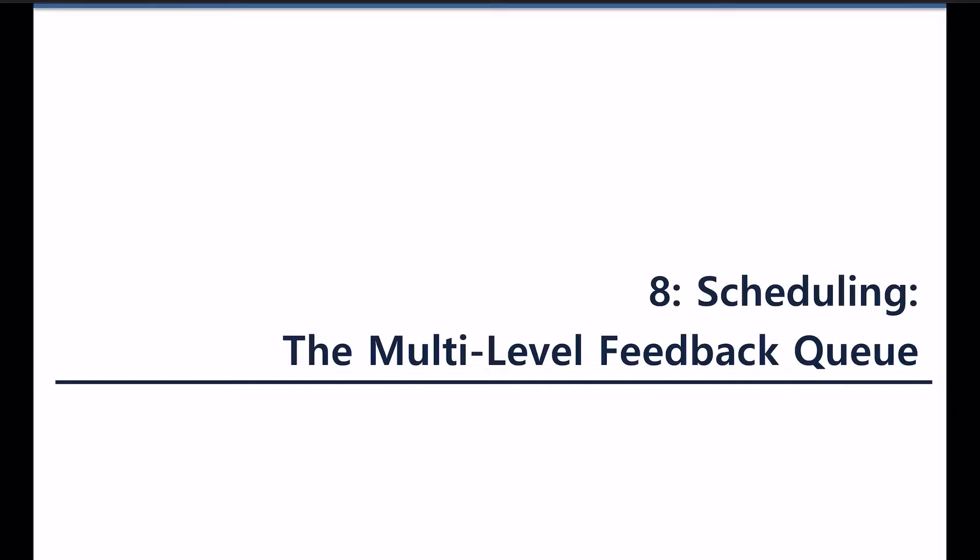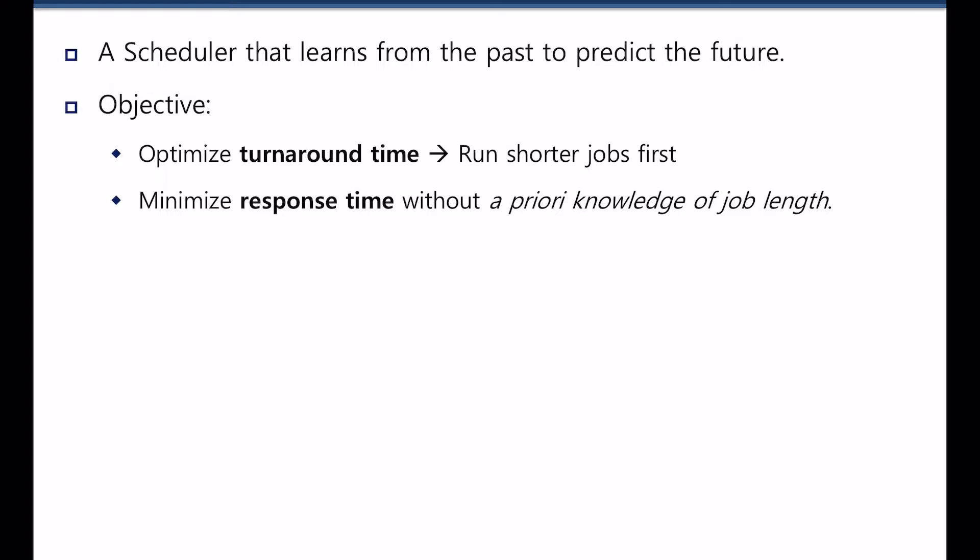Next topic is multi-level feedback queue. In shortest job first algorithm or round-robin algorithm, everything is fixed. There is only one queue of jobs in the system.